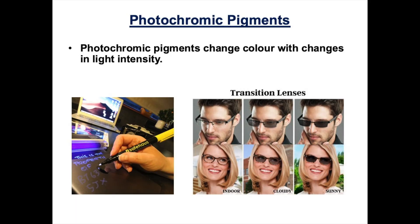The second type of smart material we're going to look at is photochromic materials. Photochromic pigments or photochromic materials change colour with changes in light intensity. These materials have a number of uses. For example, they're used as security markers. A security marker contains a photochromic pigment, and if you write on an item, you can't see it in normal light. But if you change the light intensity and use UV light, you can suddenly see the writing on the item.